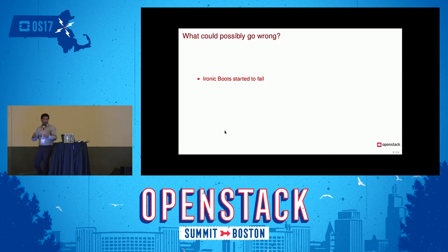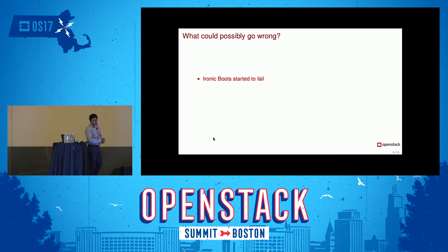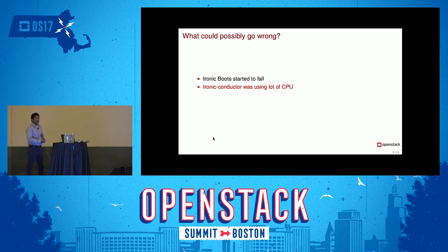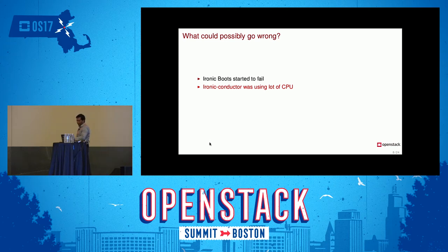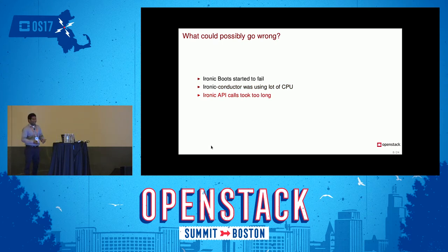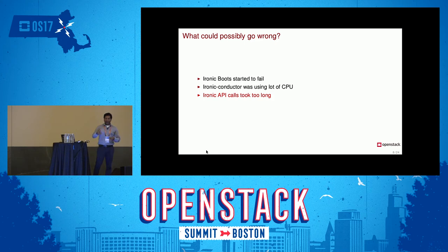Around when we imported around 10,000 nodes and were ramping up adding new nodes into Ironic and booting them, the Ironic boot started to fail. We also saw the Ironic conductor had high CPU usage — looking at top, it was always at 90 to 100% CPU. Our service engineers complained that Ironic API responses took a long time. Any conductor operations like node set power state or set maintenance took a long time.